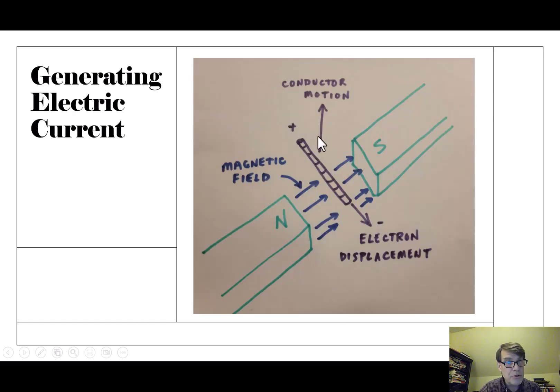And what happens when you do that, it's amazing. This is something discovered in the 1800s, that if you have a magnetic field and you move a conductor perpendicular, it's very important, it has to be at a right angle to the magnetic field.